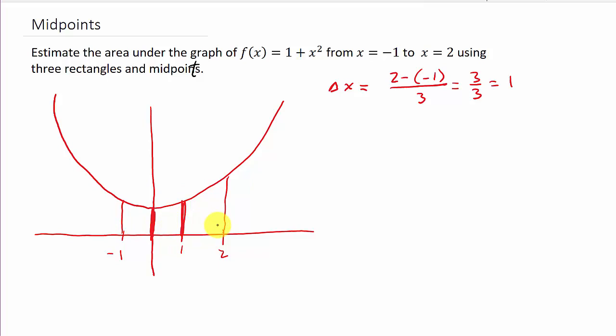Now, you can use left endpoints, right endpoints. I've got videos on that working this problem. You can go check those out. But in this one, we're going to do midpoints. So what I want to do is I want to go to the midpoint of each interval. So here's the midpoint about right there. And so my rectangle is going to be like this. And then the next interval, from 0 to 1, I'm going to go to the midpoint. And there's my rectangle. And then I'll go to the midpoint of the next one. And there's my rectangle.